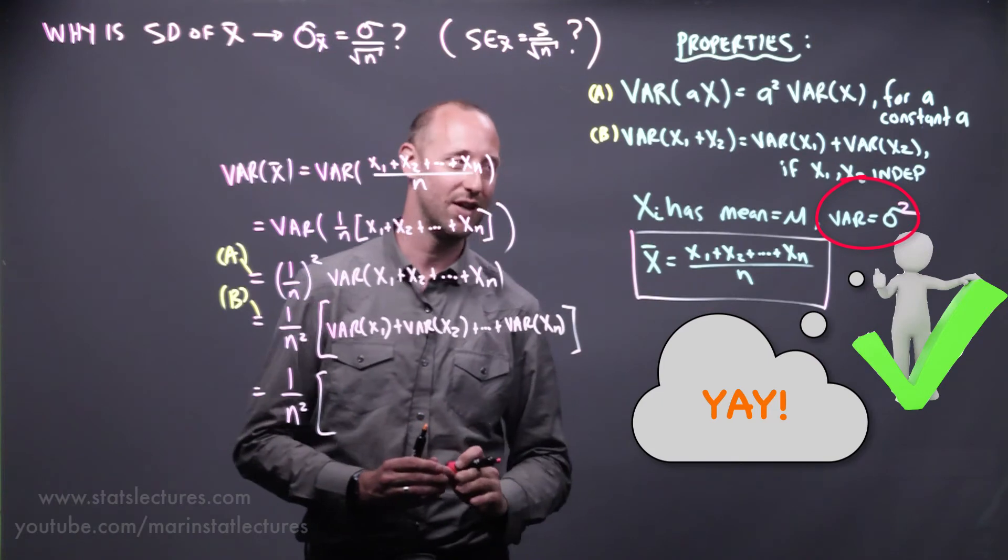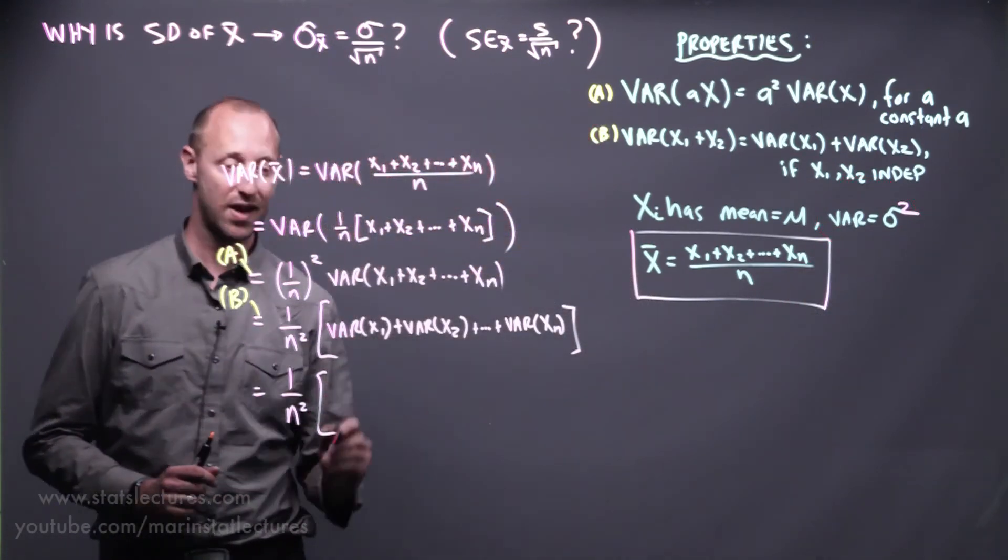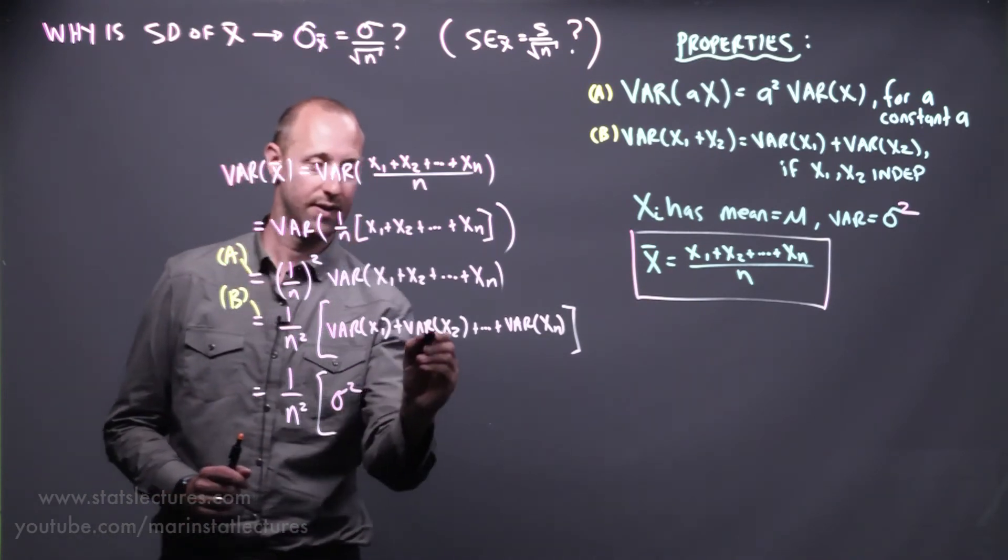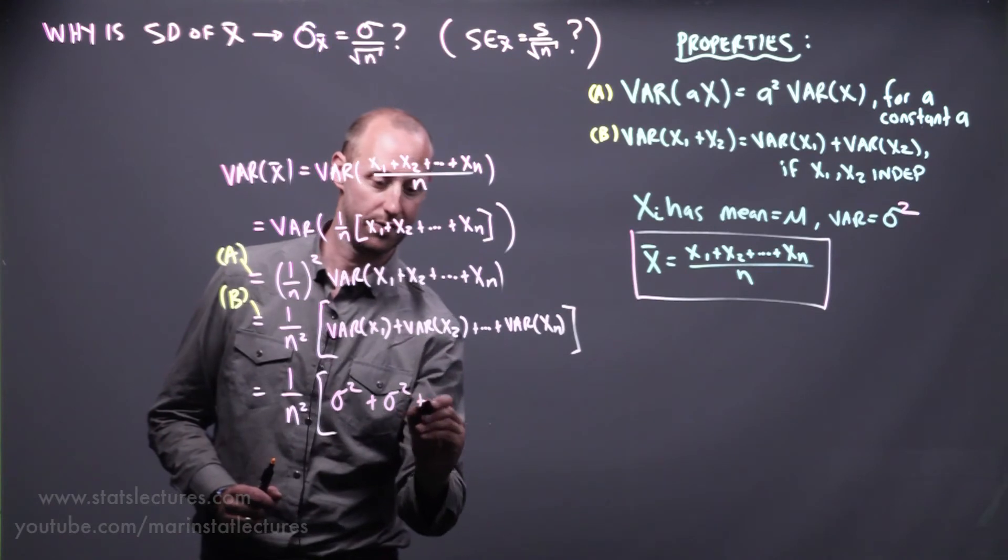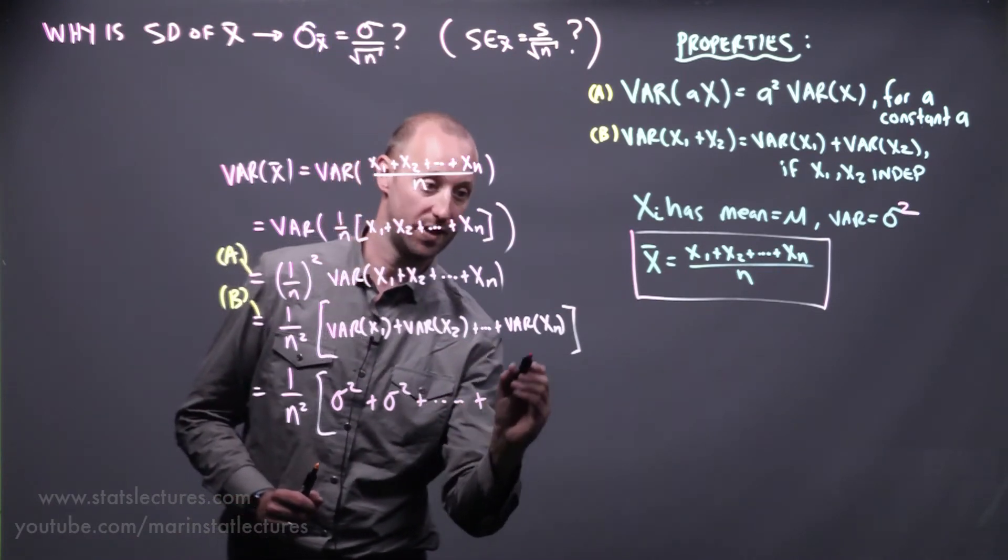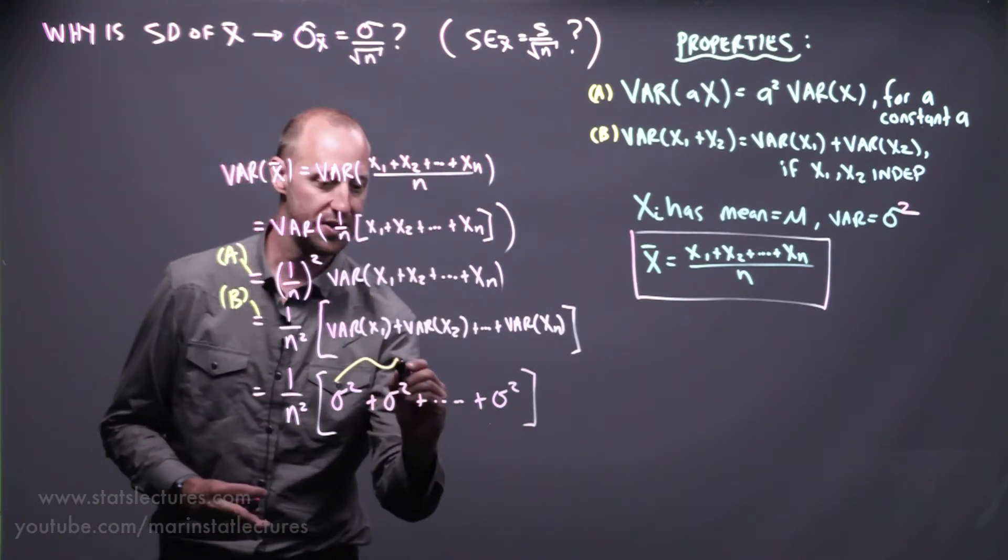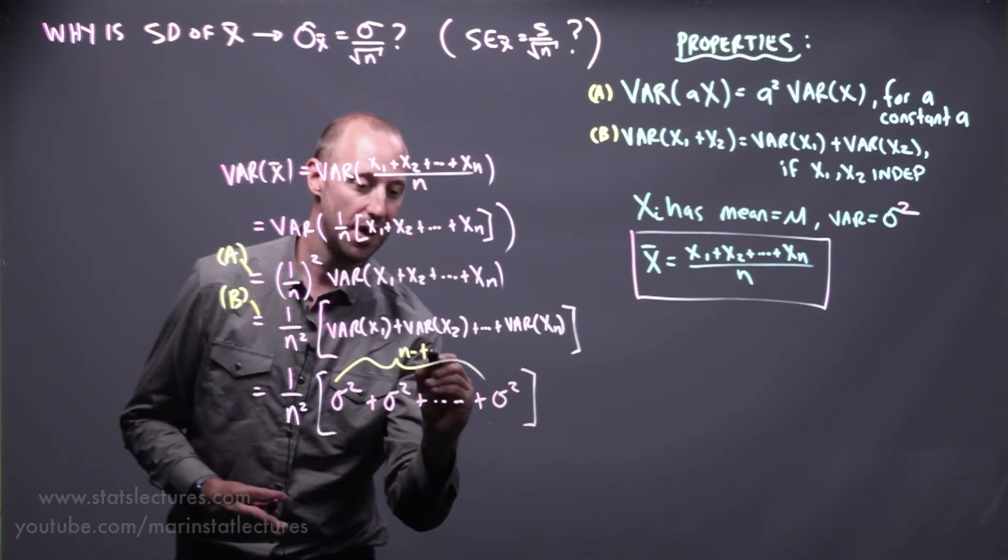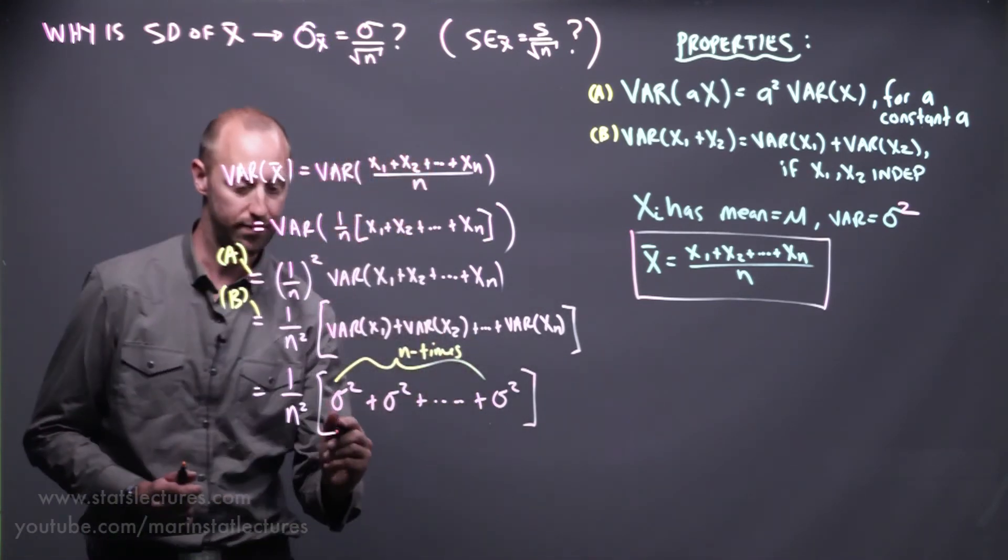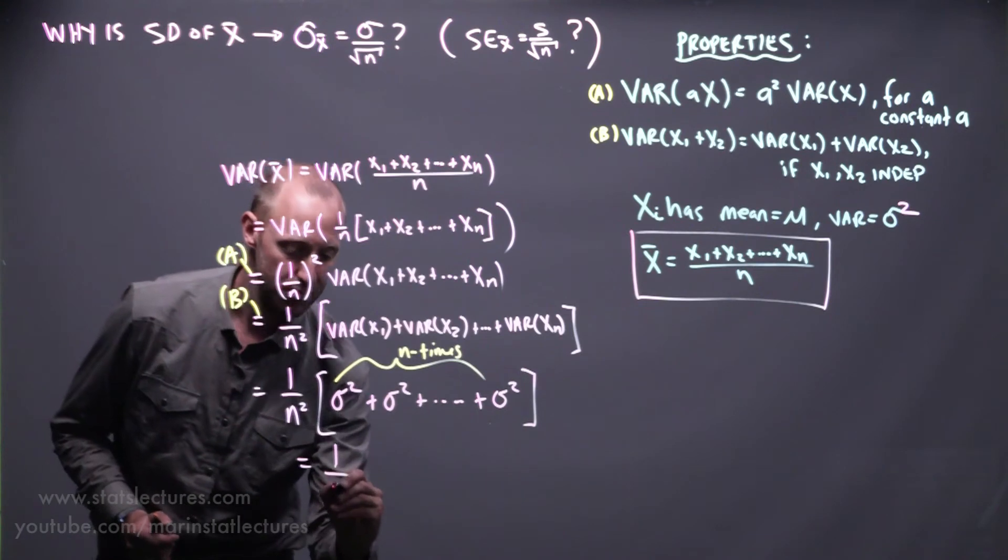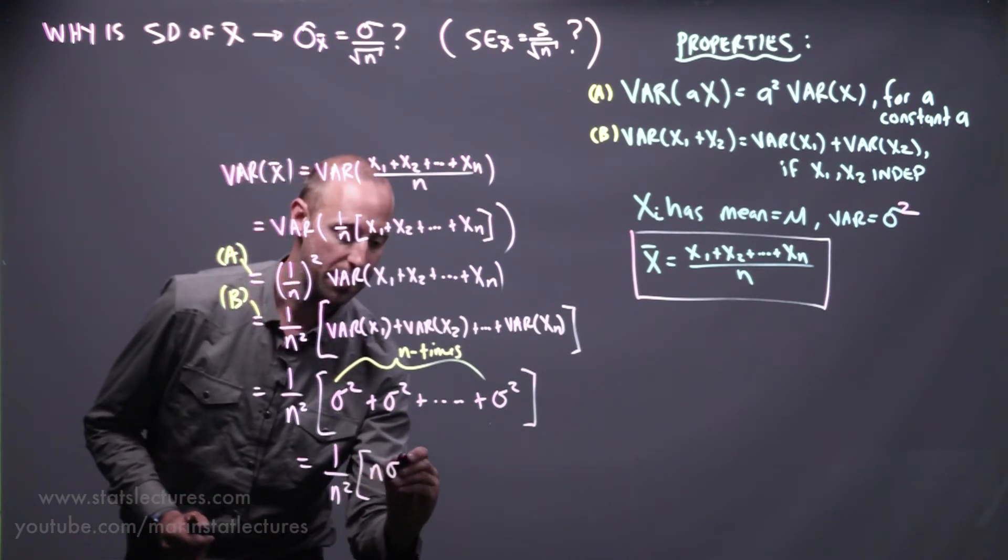So the variance of x1 is sigma squared, the variance for x2 is sigma squared, all the way up to the variance for the nth observation is sigma squared. And you'll notice we have this appearing n times for each of the x1 up to xn. So we can write this as 1 over n squared times n sigma squared.